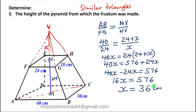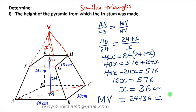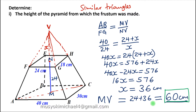Therefore the height MV — that is the height of the original pyramid — will be 24 plus 36, so we end up getting the height as 60 cm. So this is the height of the original pyramid.